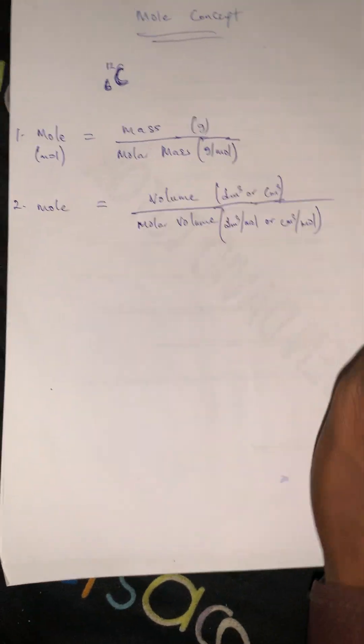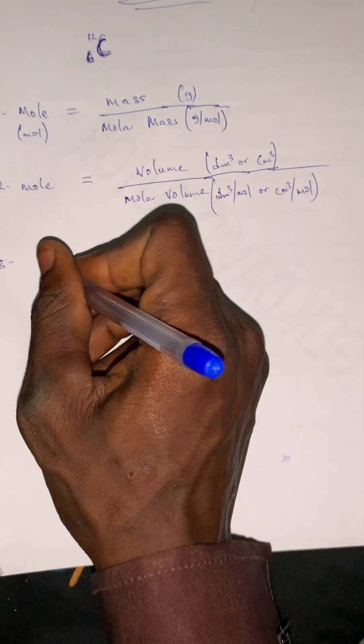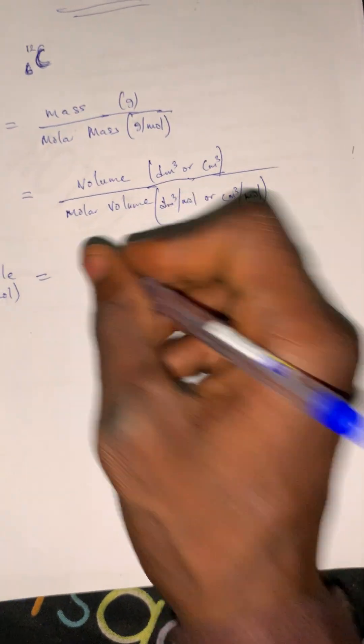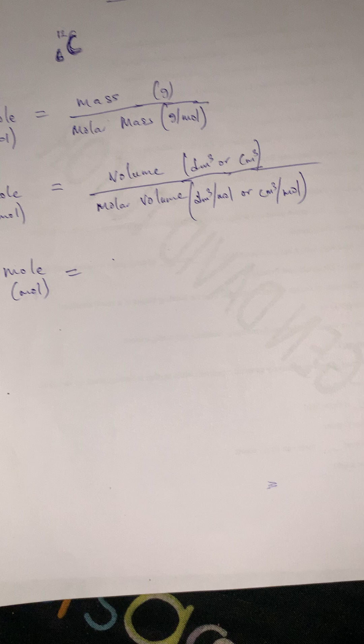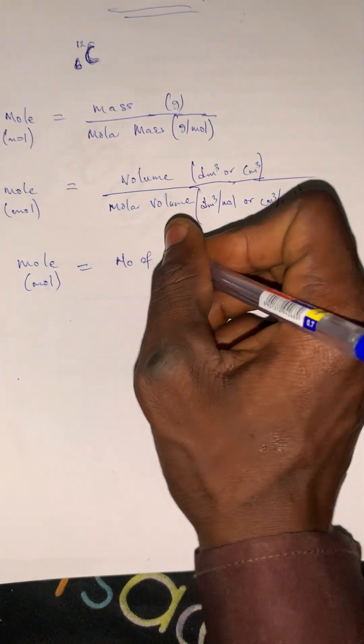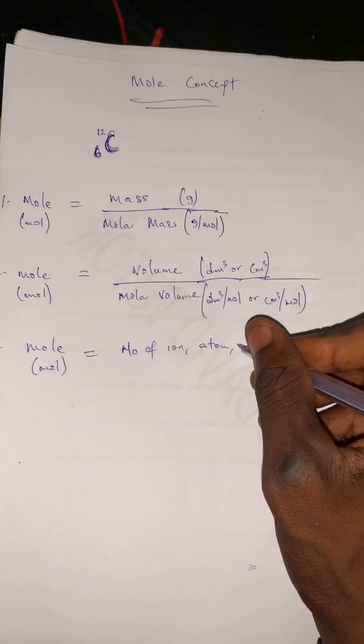Number three: we have mole, which is measured in moles. It is equal to number of ions, atoms, or molecules